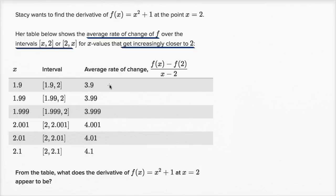As a reminder, how did she calculate this 3.9? She took f(1.9) - what is the function equal to when x is 1.9? From that, she subtracted what the function equals when x equals 2. That's our change in f. She divided it by x, which is 1.9, minus 2. So change in f over change in x.